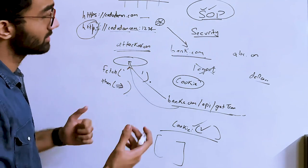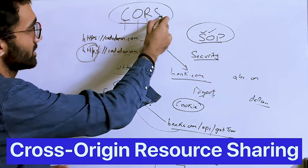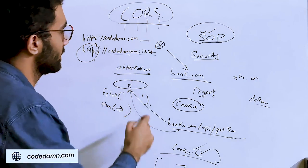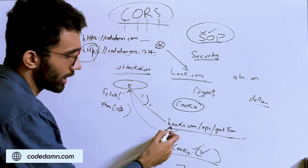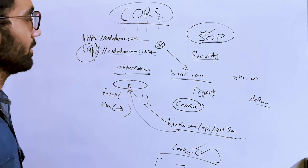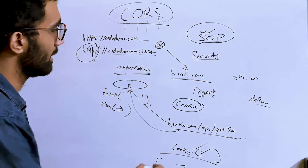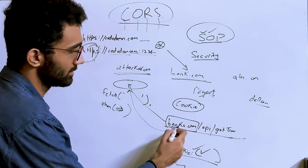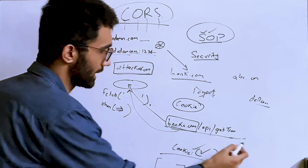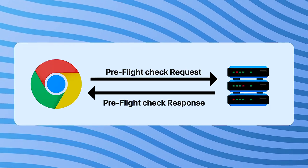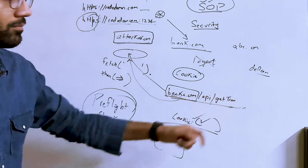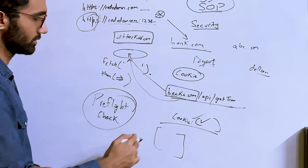The Same-Origin Policy restricts this behavior by implementing Cross-Origin Resource Sharing checks. When attacker.com tries to make a request, the browser says 'hold on — attacker.com is not the same origin as bank.com.' Before making the actual request, the browser performs a preflight check, which is super important.